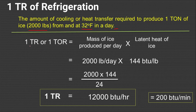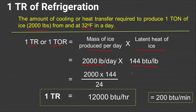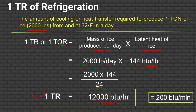1TR of refrigeration, which is also 1TOR, is equal to mass of ice produced per day multiplied by the latent heat of ice. The mass of ice produced is 2,000 pounds per day, multiplied by 144 BTU per pound, which is the latent heat of ice. So 2,000 pounds per day is converted to pounds per hour as 2,000 divided by 24, and it is multiplied by 144, which gives 12,000 BTU per hour — which is 1 tonne of refrigeration.